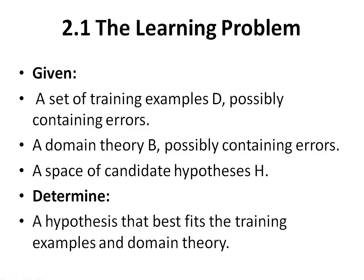The learning problem is defined as follows. The inputs given for this learning problem are a set of training examples, a domain theory, and a space of candidate hypotheses. These are represented with capital D, capital B, and capital H respectively. The training examples may possibly contain errors, and the domain theory may also contain errors. What we determine here as output is the best-fit hypothesis which best fits the training examples as well as the domain theory.